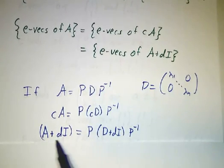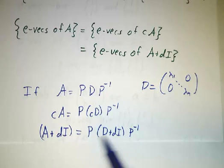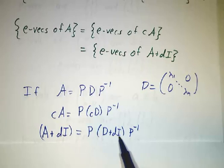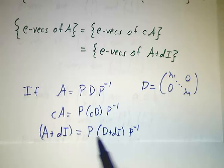If you add a multiple of the identity, you can put the multiple of the identity right in the middle, because P times the identity times P inverse is just the identity. So, eigenvectors are the same, eigenvalues go up by whatever constant you have here.